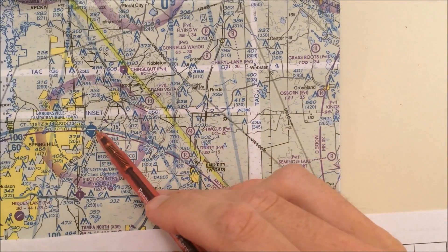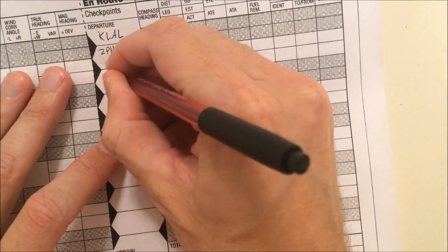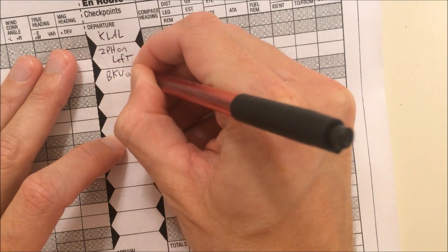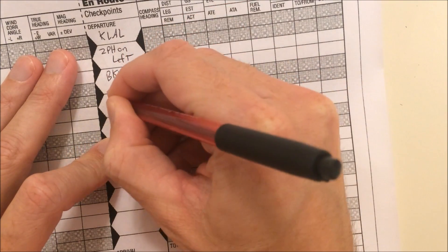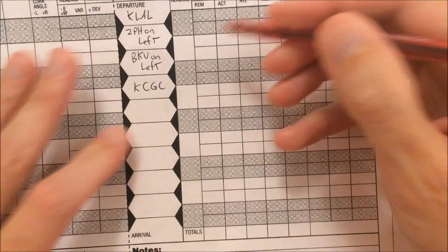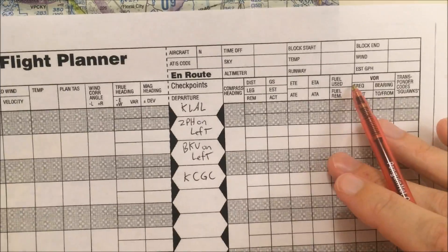The checkpoint after that is when Brooksville Airport is on my left. And my final is my destination airport. So number one, I have my checkpoints filled in.